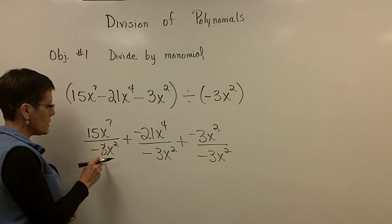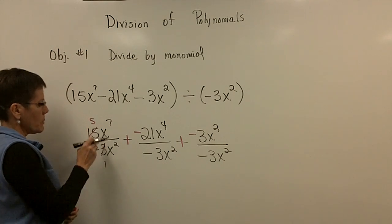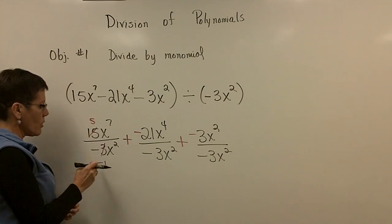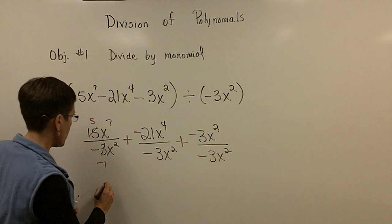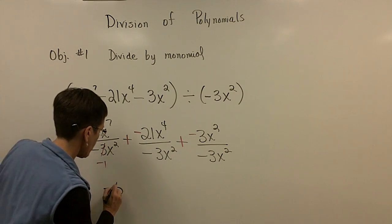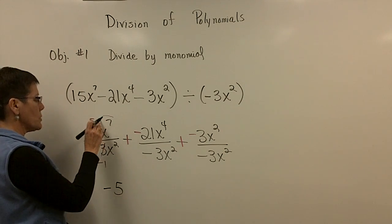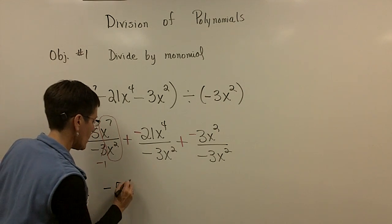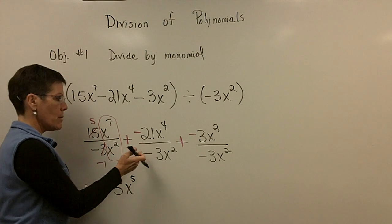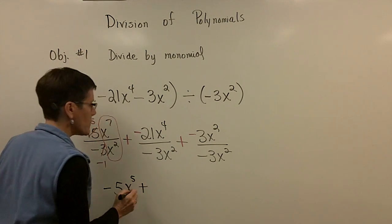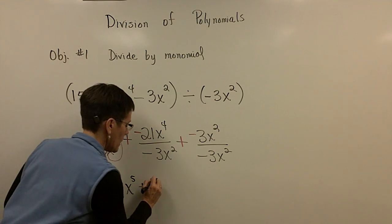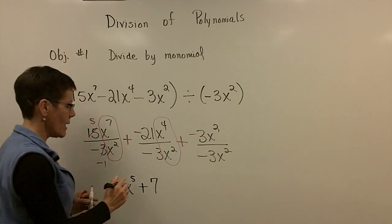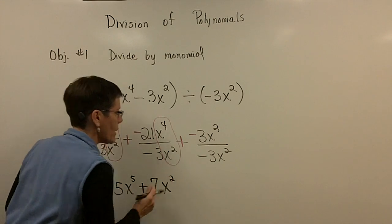So three goes into here once and into here five times, but don't lose that negative sign. It really goes in there negative one time. So five over negative one is negative five. And when I subtract these exponents, I get x^5. Then a negative divided by a negative is positive, and 21 divided by three is seven. And when I subtract those exponents because their bases are alike, I get x^2.